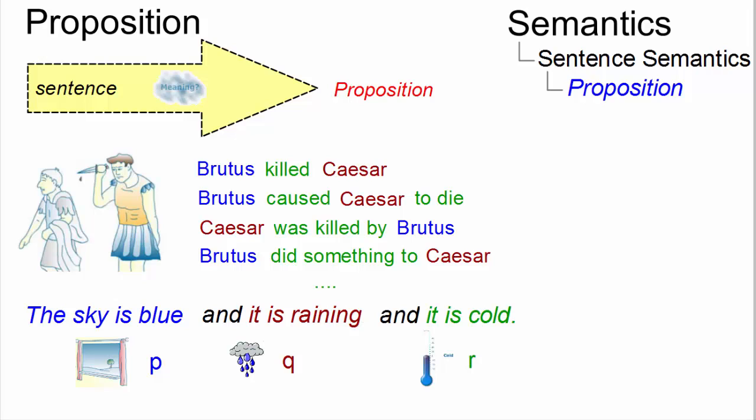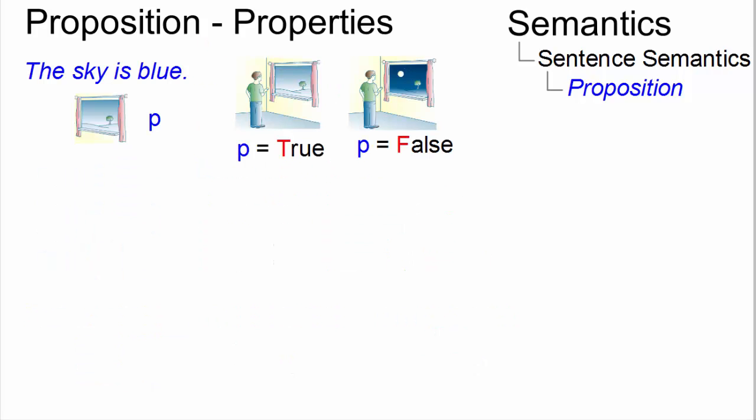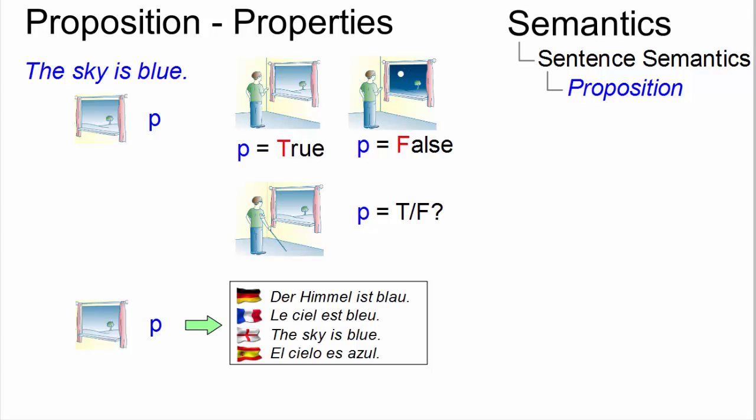The following properties are usually ascribed to propositions. Propositions have a truth value, that is, they can be true or false. They may be known, believed, doubted, asserted, denied, or queried, and they remain constant when translated between languages.